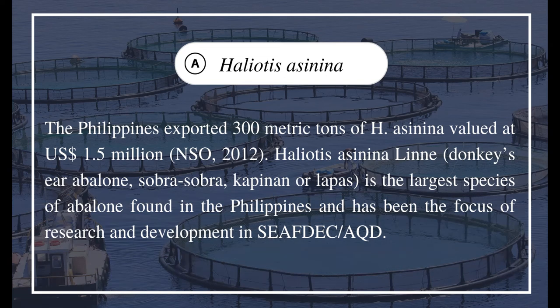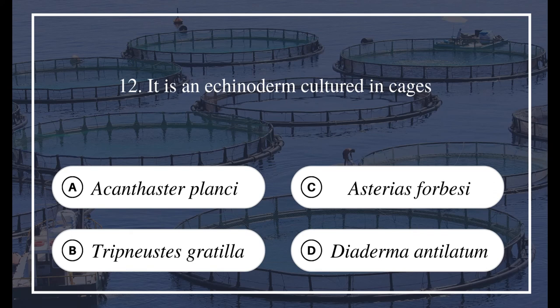Options: a) Haliotis asinina, b) Haliotis varia, c) Haliotis diversicolor, d) Haliotis discus hannai. The answer is A, Haliotis asinina. The Philippines exported 300 metric tons of H. asinina valued at 1.5 million US dollars (NSO 2012). Haliotis asinina, donkey's ear abalone (sobra-sobra, capanin, or lapas) is the largest species of abalone found in the Philippines and has been the focus of research and development at SEAFDEC/AQD.